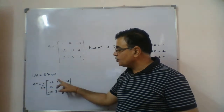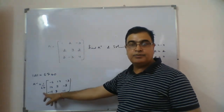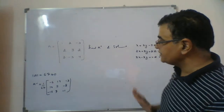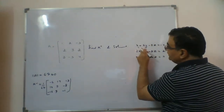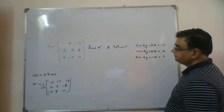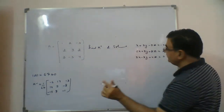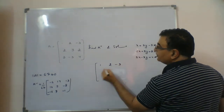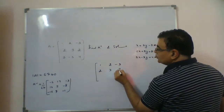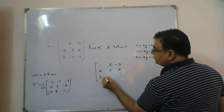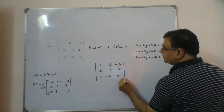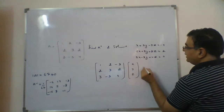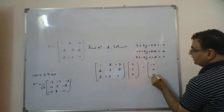The inverse will be adjoint A divided by determinant A. So adjoint A divided by 67 — I am taking this directly. That means A inverse is now known. Now we want to solve this system using A inverse. When you write this system, you get the matrix with rows 1, 2, -3; then 2, 3, 2; and 3, -3, 4.